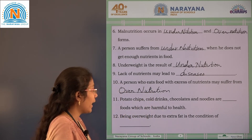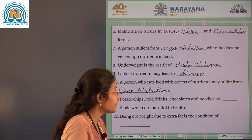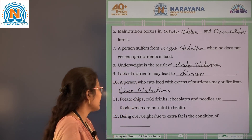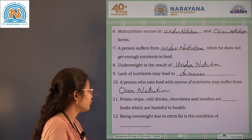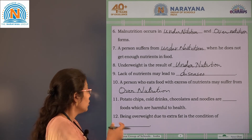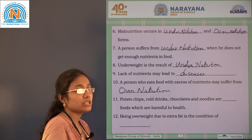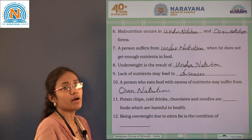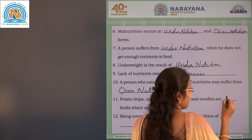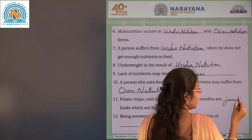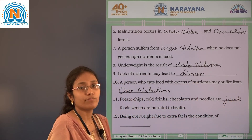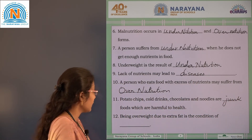See the eleventh blank: potato chips, cold drinks, chocolates, and noodles are junk food, which are harmful to health.